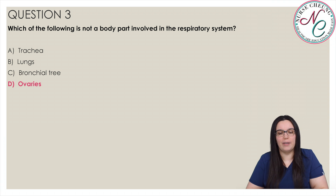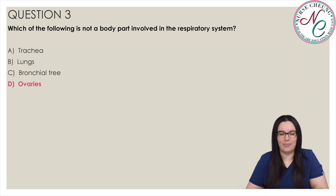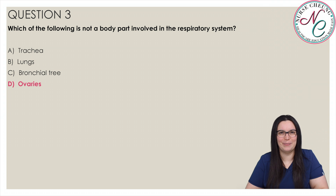The ovaries are a part of the female reproductive system. The trachea, lungs, and bronchial tree are all part of the respiratory system.